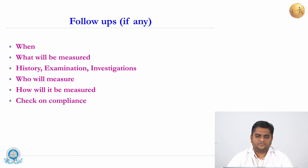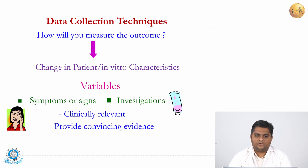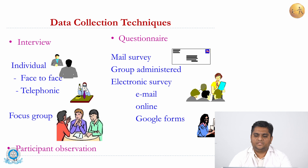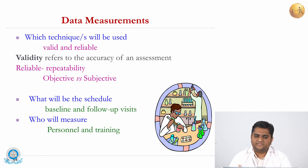Follow-ups, if any, should be mentioned — when they will be done and what will be measured, including history, examination, investigations, who will measure it, how it will be measured, and compliance checks. For data collection, describe how the outcome or change in patient characteristics will be measured — whether symptoms, signs, or investigations. Different methods for data collection include questionnaires via individual face-to-face or telephonic interviews, mailed survey questionnaires, group administration, electronic surveys via email or Google Forms, and focus group discussions. The technique used and the validity and reliability of the data measurement tool should also be stated.